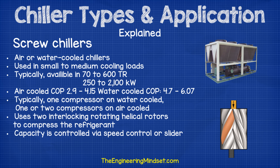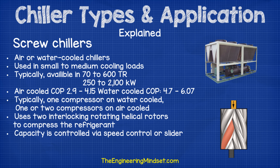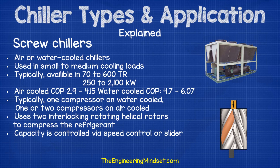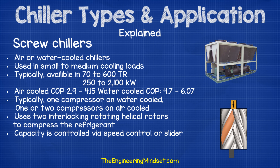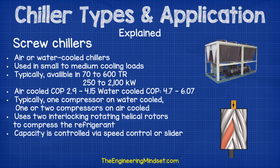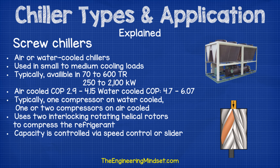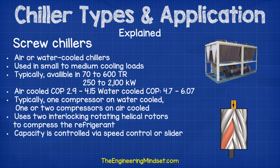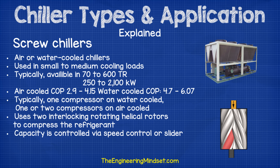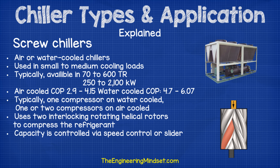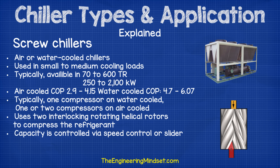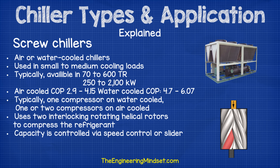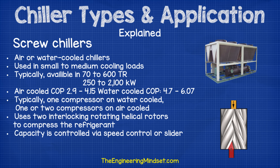Screw compressors can be used on air or water-cooled chillers and are used in small to medium cooling loads, typically available in 70 up to 600 tons or 250 to 2,100 kilowatts. Air-cooled screw compressors will typically have a COP of around 2.9 up to 4.15, while water-cooled will have a COP of 4.7 up to 6.07. Typically they'll have one compressor on a water-cooled chiller, or one to two compressors on an air-cooled chiller. They use two interlocking rotating helical rotors to compress the refrigerant, and capacity is controlled via speed control or a slider.